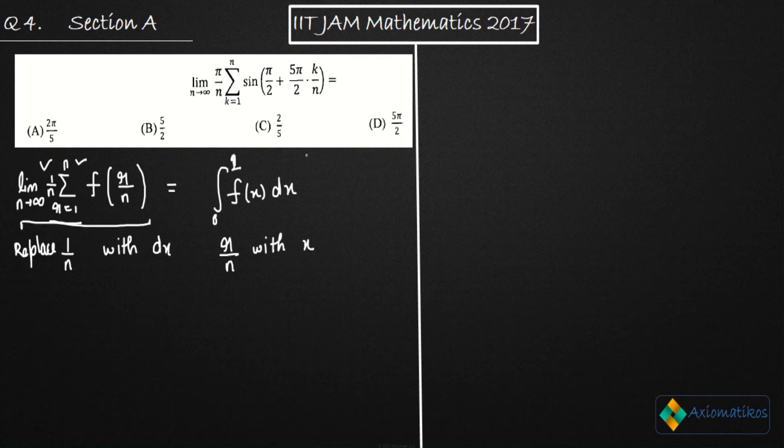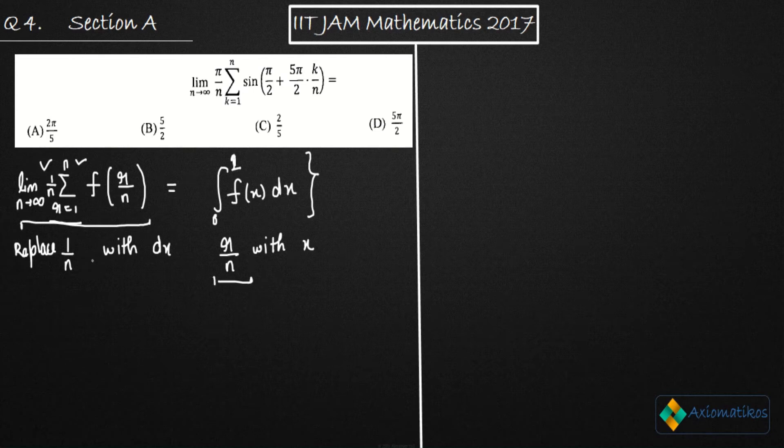So this is the result that I was talking initially. You have to remember this limit and always remember that R by N is replaced with X and 1 by N is replaced with dx. I'm not going to explain how it comes, but by the definition of Riemann integration, you can write this formula.